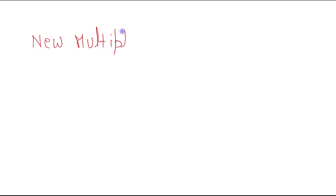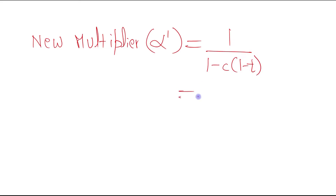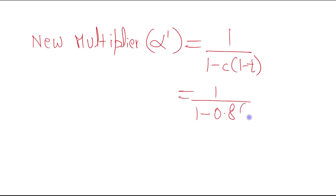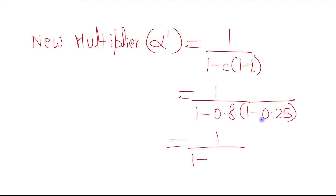Now we calculate the new multiplier, alpha dash. Using the formula 1 divided by (1 minus c times (1 minus t)): MPC is 0.8 and the new tax rate is 0.25. So 0.8 times (1 minus 0.25) equals 0.8 times 0.75, which is 0.6. Therefore alpha dash equals 1 divided by 0.4, which equals 2.5.